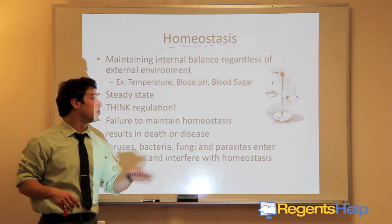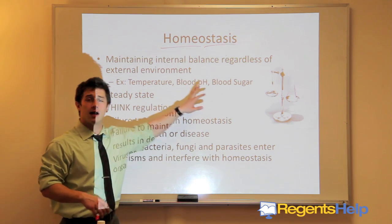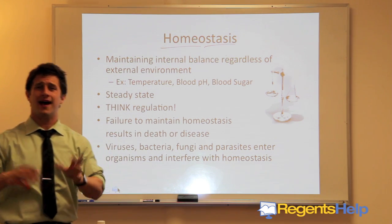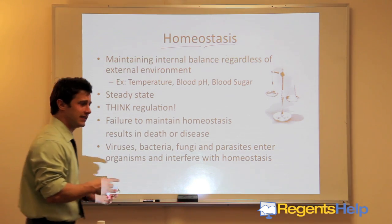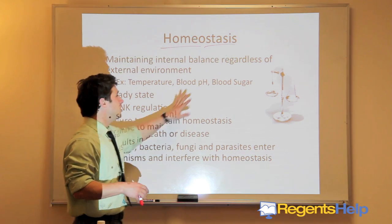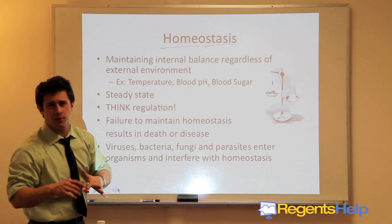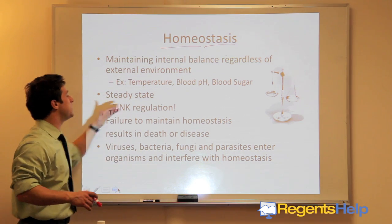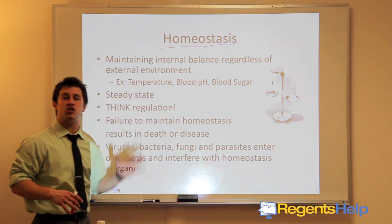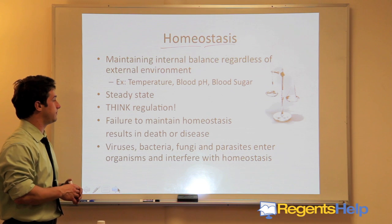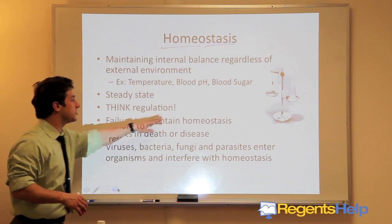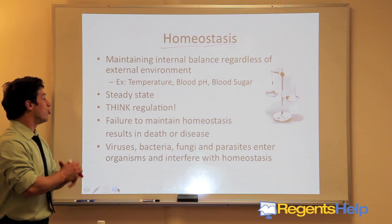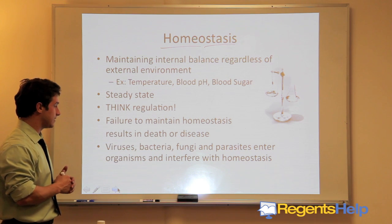Even if you jump in a pool that has a pH of about 7.9 or 6.5, your blood pH is going to stay around 7.0 to 7.2. You should be thinking regulation, the nervous system, and the endocrine system. Failure to maintain homeostasis or these same statuses results in death or disease.